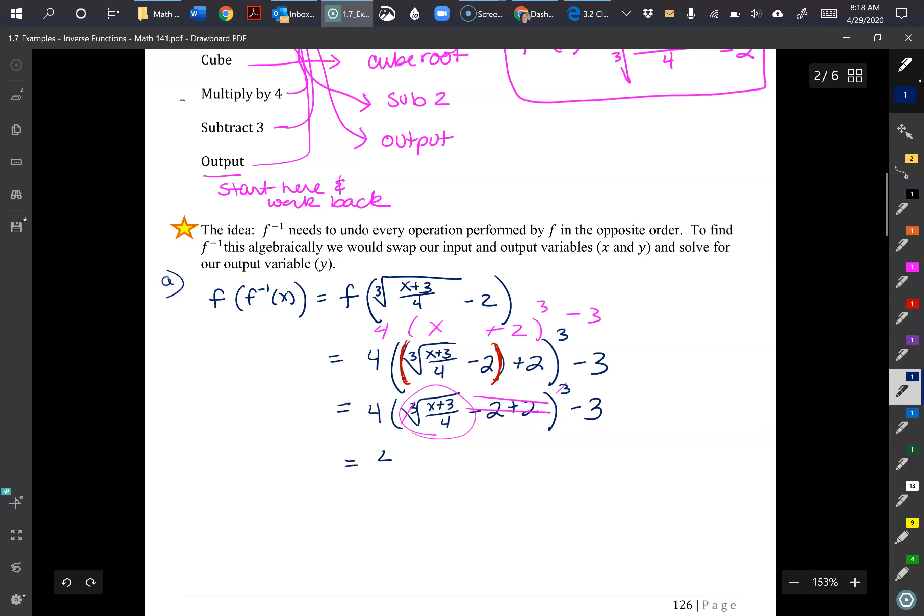So we have 4 times X plus 3 over 4 and then minus my 3. Now again we have an inverse. There's lots of inverse things going on when you are composing an inverse, kind of makes sense, right? And then again now I'm left with X.